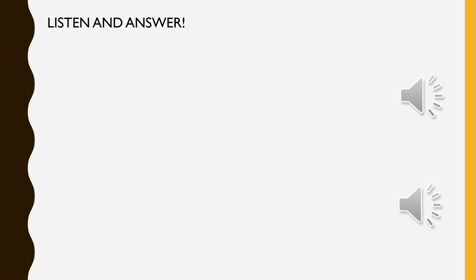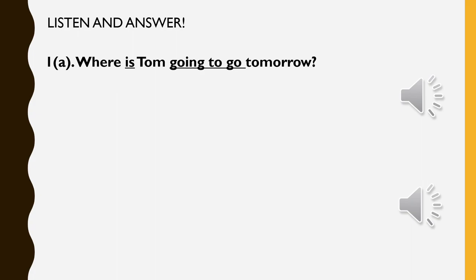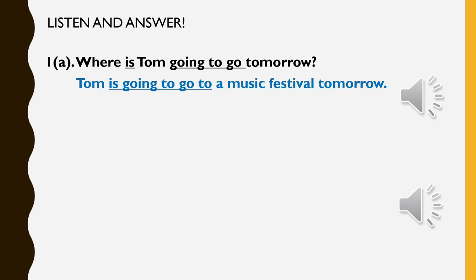Sekarang sudah habis rakaman. Cikgu nak tanya soalan dahulu. Nombor 1: Where is Tom going to go tomorrow? Kemana kah Tom mau pergi besok? Tadi ada dia katakan Tom mau pergi ke concert ataupun music festival. So the answer here is: Tom is going to go to a music festival tomorrow. Pastikan struktur yang digunakan itu betul. Cikgu mau menekankan lebih banyak kepada struktur yang telah kita belajar — iaitu is/am going to plus verb.